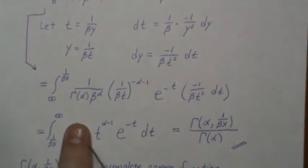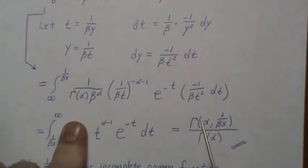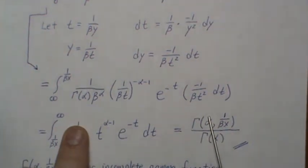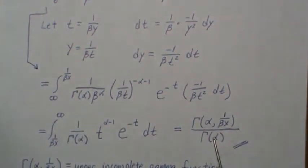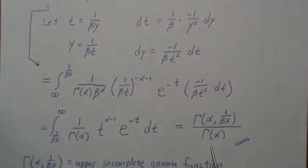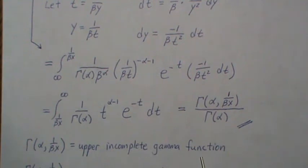that is what's called an upper incomplete gamma function. And then that is this piece, which is called, you know, just a gamma function evaluated with alpha. So this piece here is called an upper incomplete gamma function.